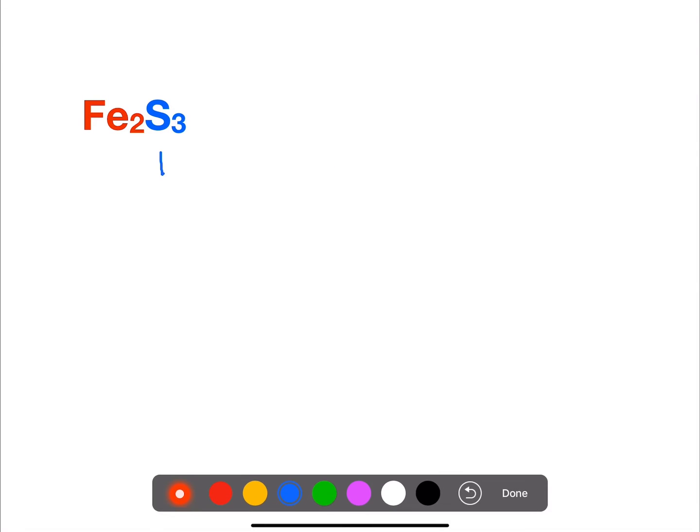So we have iron sulfide, Fe2S3. Okay, so we have three sulfurs, each have a mass of 32, so it's 96. And then we have two irons, each iron has a mass of 56, so it's 112. Then we add these together to get 208.